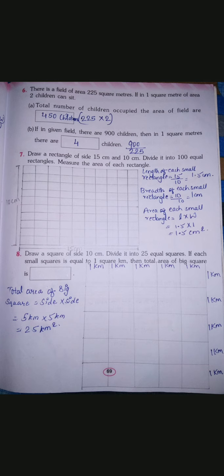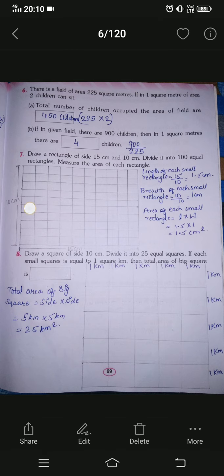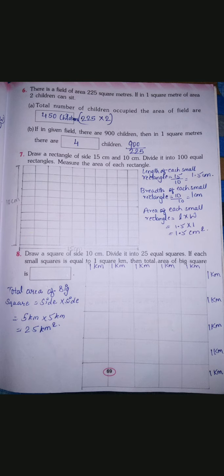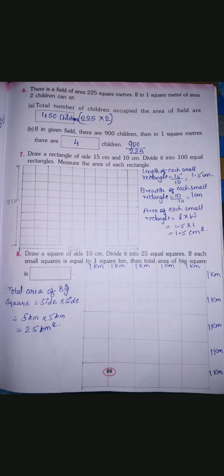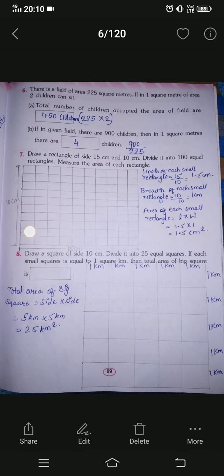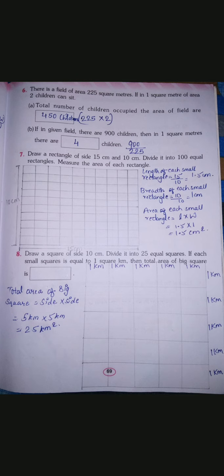Same way we'll find the breadth. Width and breadth are the same, don't get confused. Breadth of each small rectangle: the width of the big rectangle is 10 centimeter, and 10 boxes are drawn in this width. So we do 10 divided by 10. This 10 centimeter width is divided into 10 boxes, so 10 divided by 10 gives us the answer 1 centimeter.